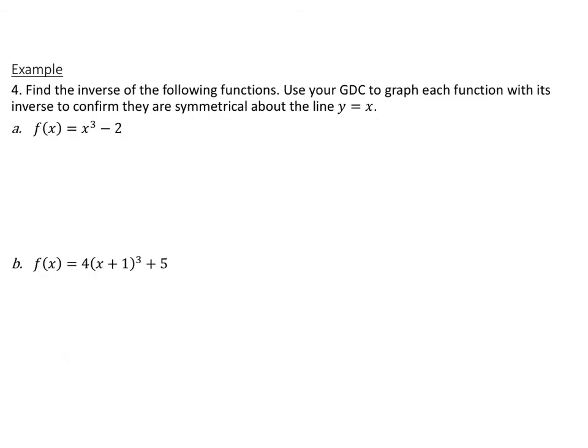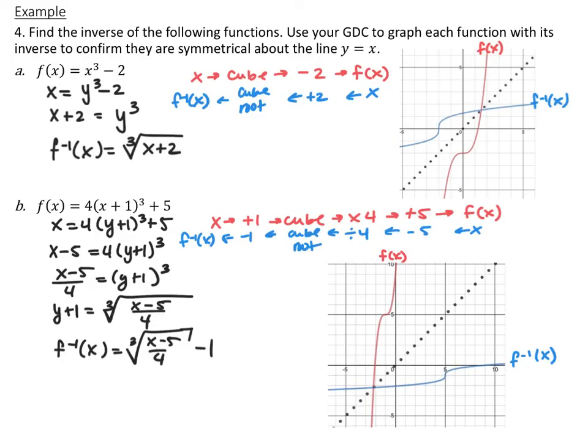Here we have two 1-to-1 functions to find the inverses of. For f(x) = x³ - 2: switch x and y to get x = y³ - 2, add 2 to both sides, take the cube root. The inverse function is f⁻¹(x) = ∛(x + 2). Or working backwards logically: starting with x, cube it, subtract 2 to get f(x); so the inverse starts with x, adds 2, then takes the cube root.